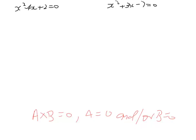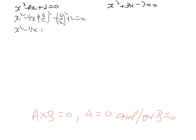The other thing we can do is complete the square. In doing so, what we'll do is say x squared minus 4x plus (4 over 2) squared minus (4 over 2) squared plus 2 equals 0. It's 2 squared, 2 squared.